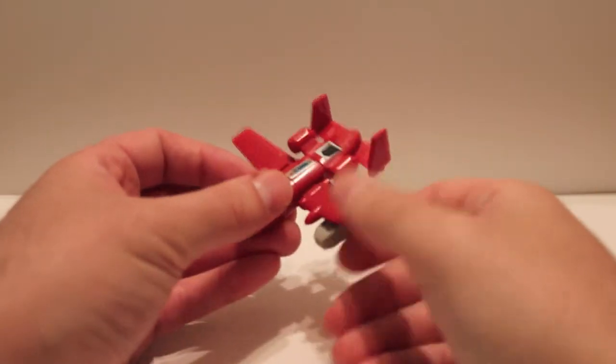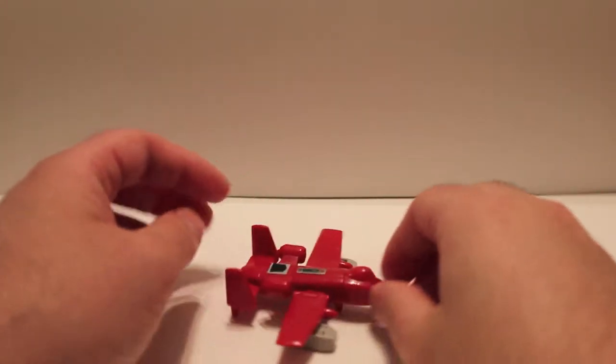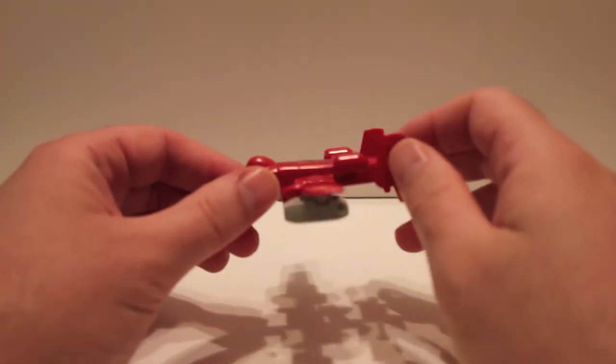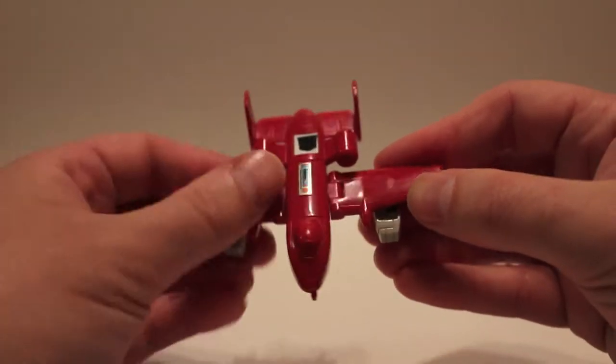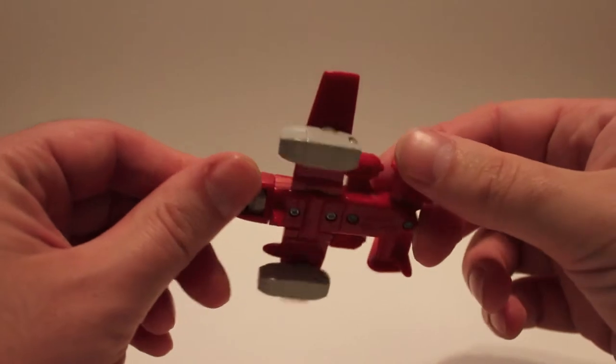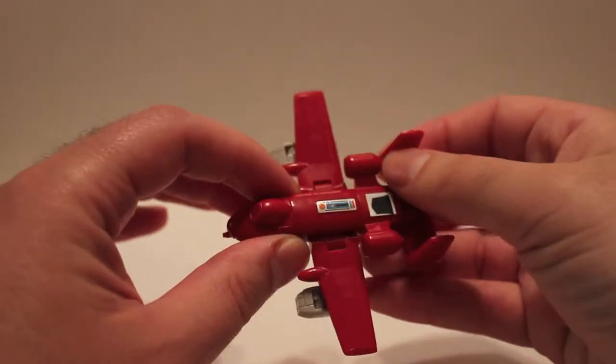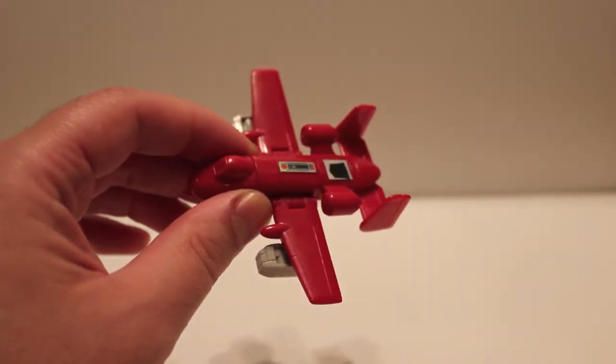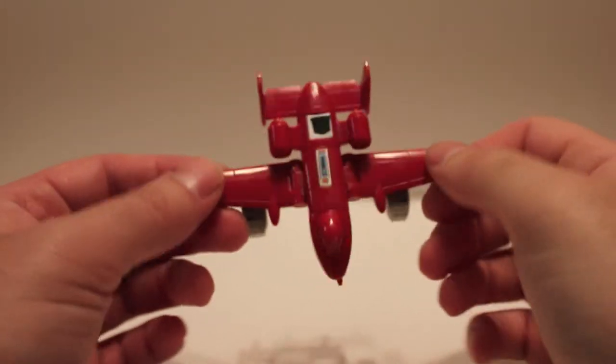He's kind of like an A-10 Warthog - that's what he most closely resembles. His name is Power Glide, and he's not a glider, whatever. It's G1, what do you want? You can quite obviously see thrusters resembling an A-10.